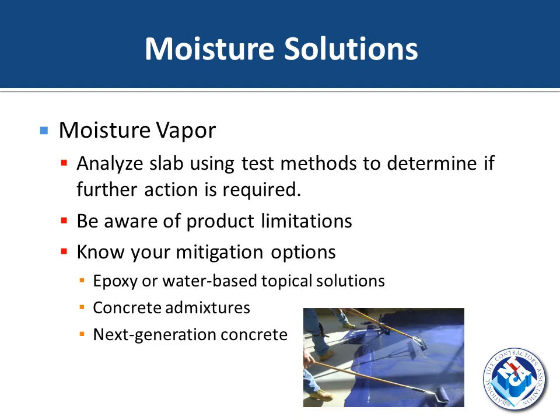Now that you know how to test, what do you do with those test results? First, analyze your slab using the F2170 or F1869 test methods to determine if further action is required. Further action may be required based on your products' limitations, whether for surface preparation, crack isolation, etc. Further action may be as simple as waiting for the moisture content to decrease, but many construction sites don't have the luxury of waiting, so moisture mitigation products can be used.